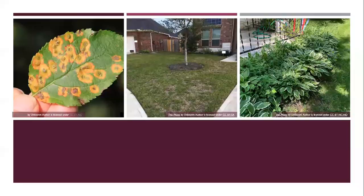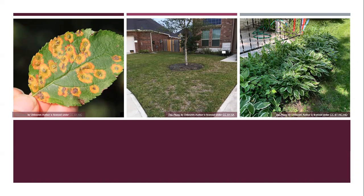To get us started, I wanted to share some common things I've been seeing — between working with extension and talking with friends, colleagues, and family, you get to see things in people's yards. These are three really good examples from the last few years. The image on the left is a leaf from an apple tree that has cedar apple rust. That tree is my father-in-law's; he asked me what to do and I gave him some advice.